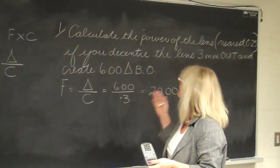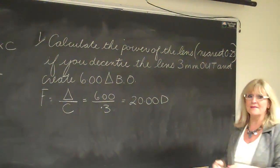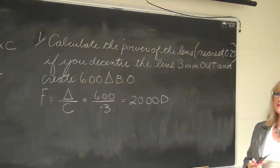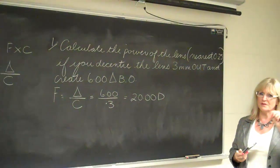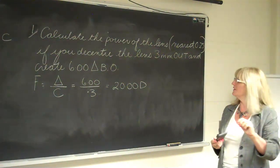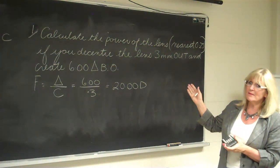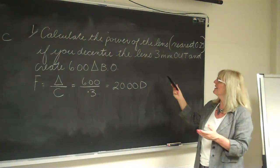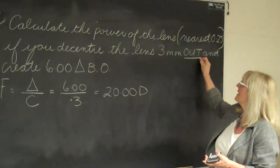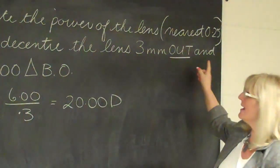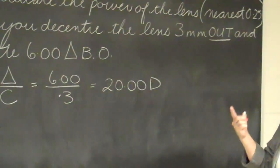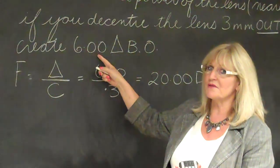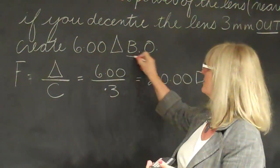Now, example number one says calculate the power of the lens, and when we calculate powers of the lenses, we always calculate the final answer to the nearest quarter of a diopter. So we're to calculate the power of the lens to the nearest quarter. If you decenter the lens three millimeters out, you create six prism diopters, base direction out.